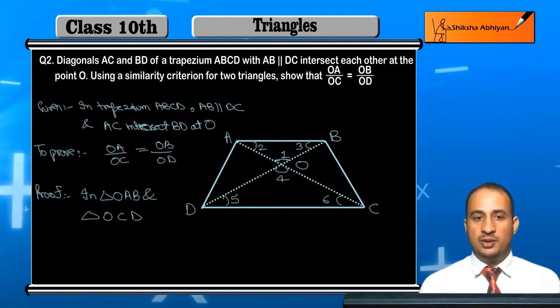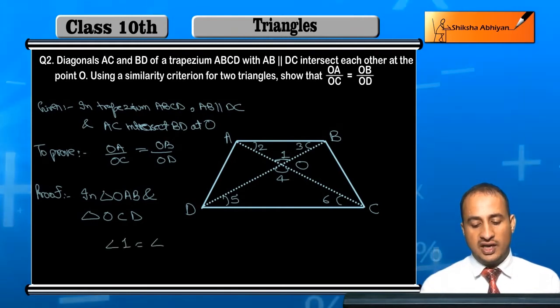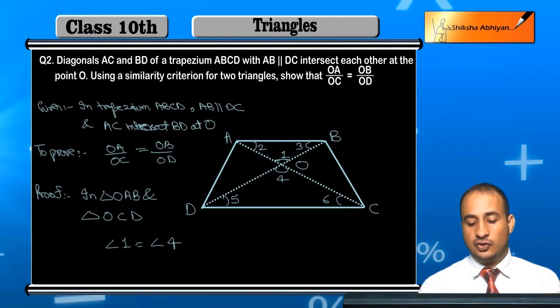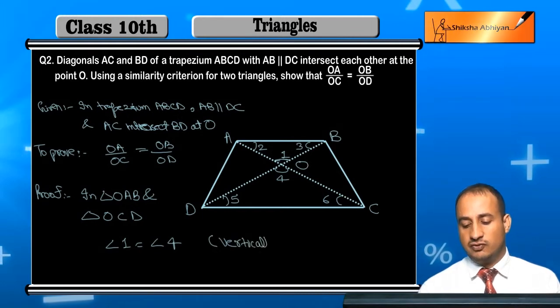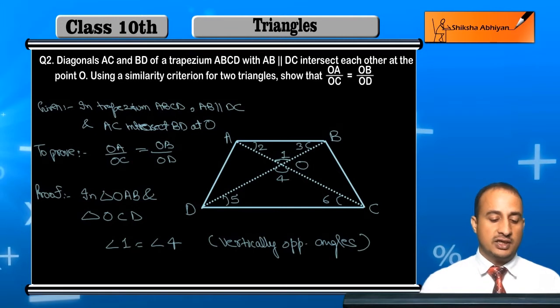Angle 1 is equal to angle 4. Why? Because these two lines intersect, so they are vertically opposite angles, and vertically opposite angles are equal.